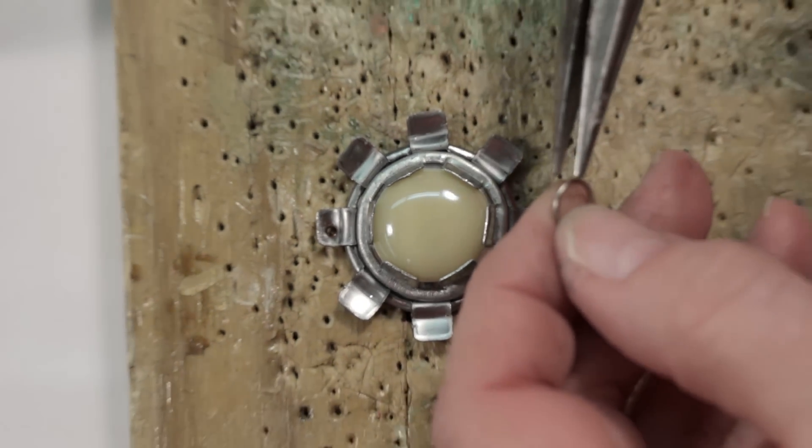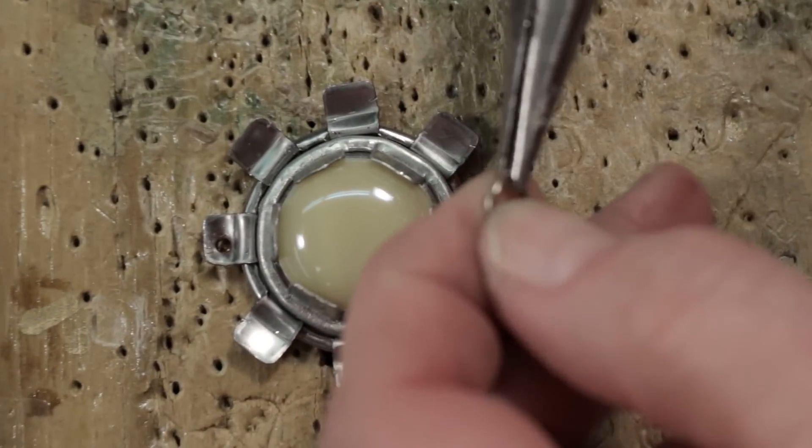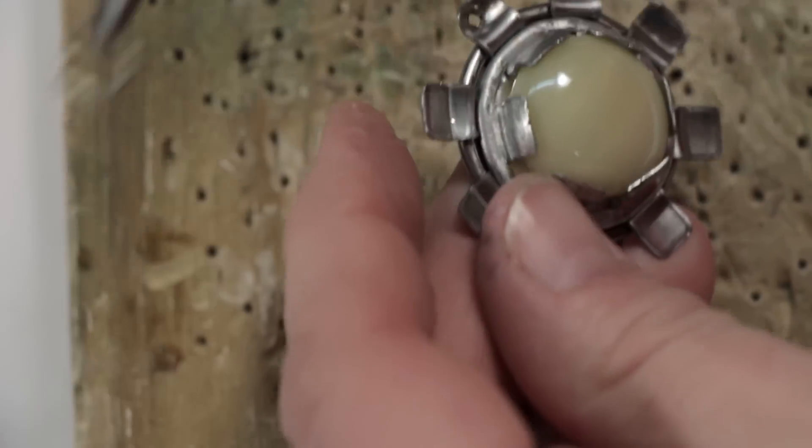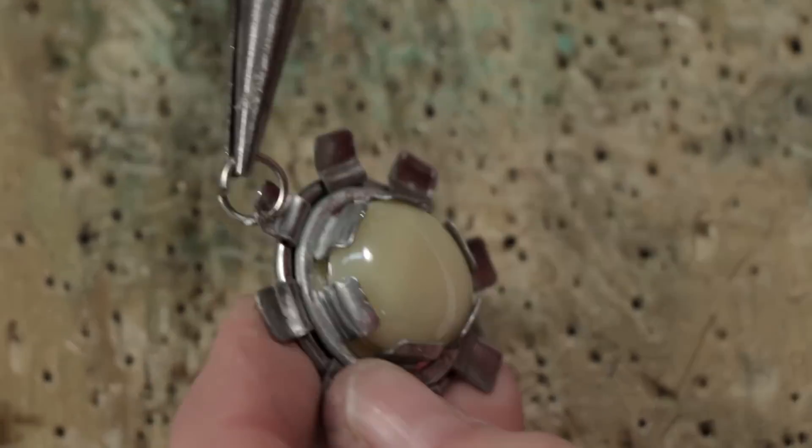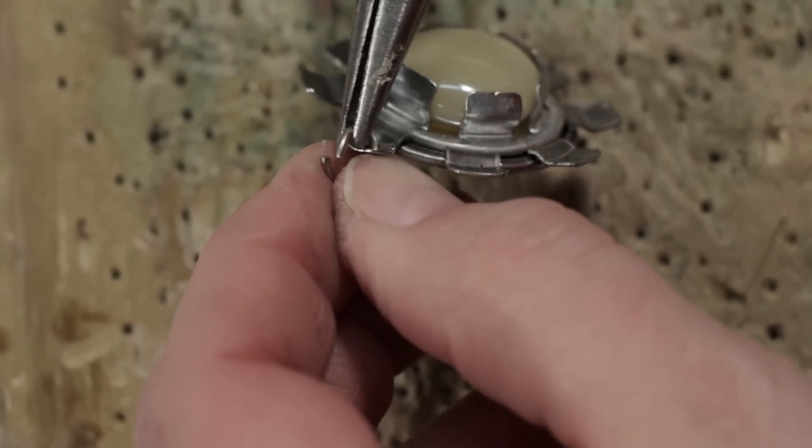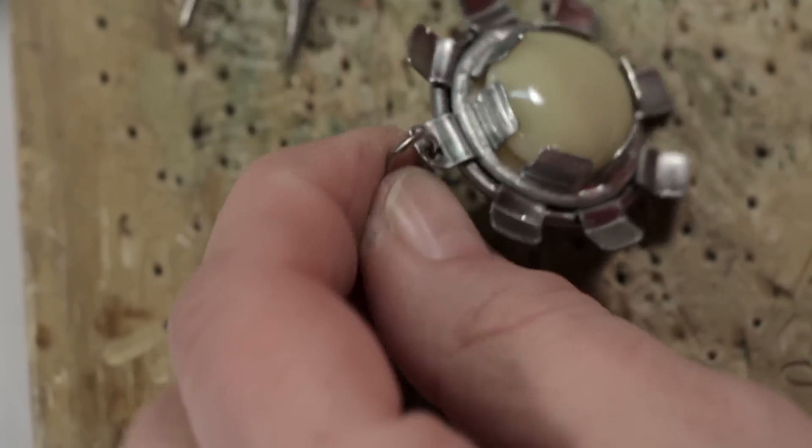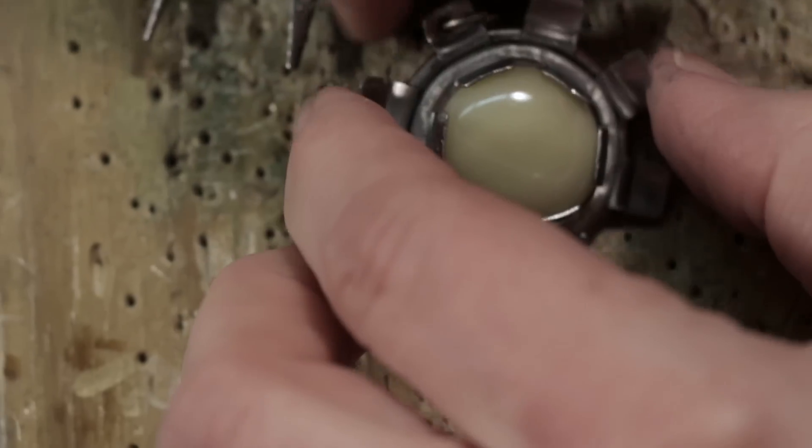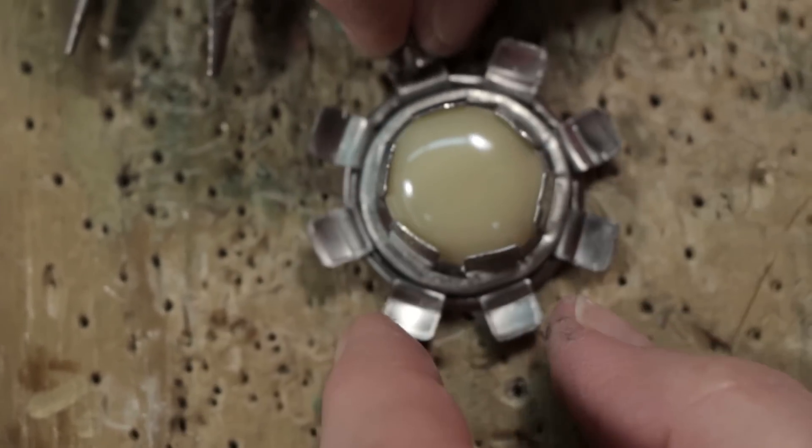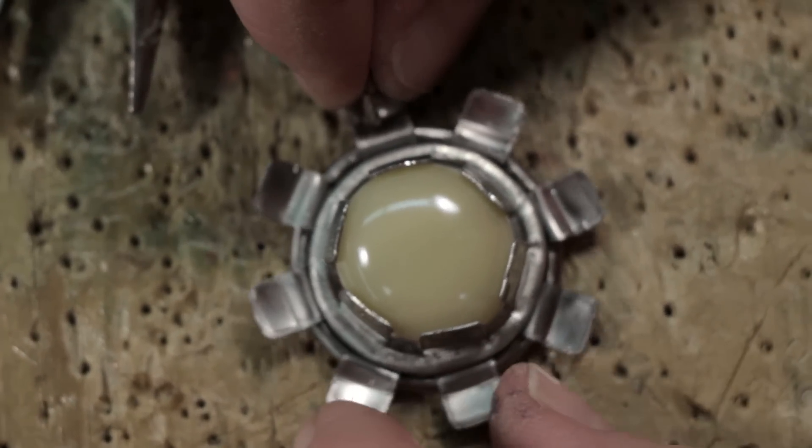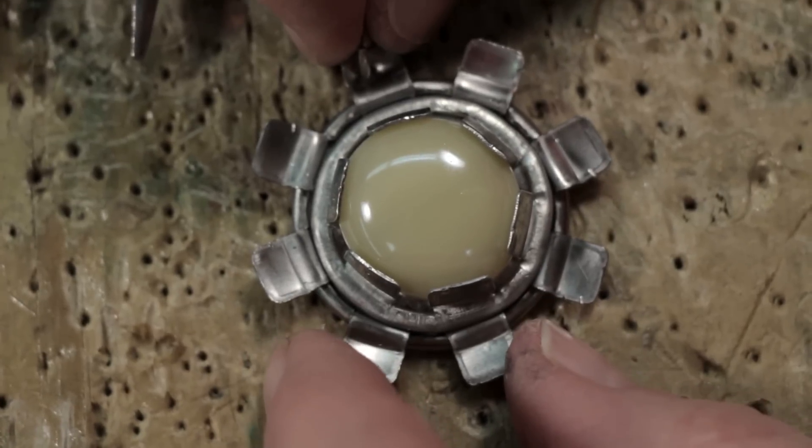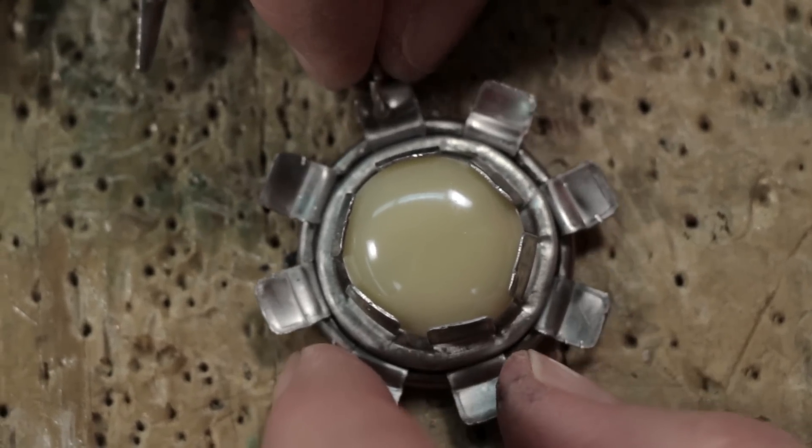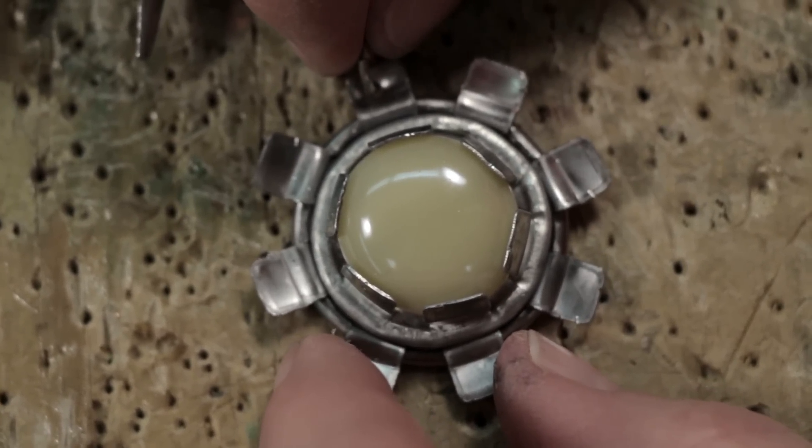We're going to take our jump ring and our pliers, open the jump ring, and we're going to put the jump ring in the hole, close the jump ring, and we have a beautiful flower pendant made from hardware store parts. I was going to show you some other examples that I've made using the same parts.